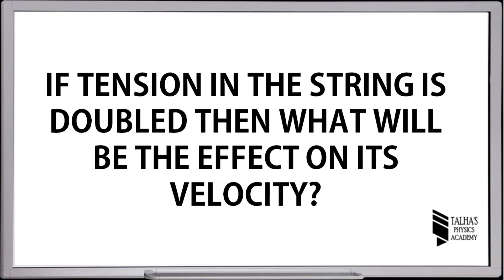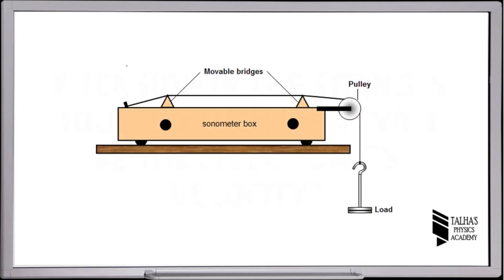If tension in the string is doubled, then what will be the effect on its velocity? We have a sonometer box on which two movable bridges are present.